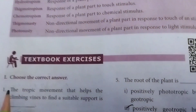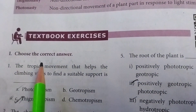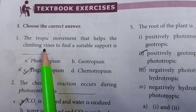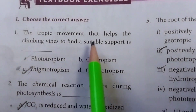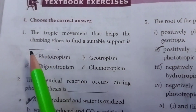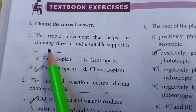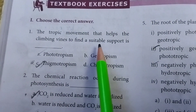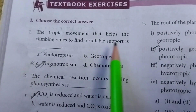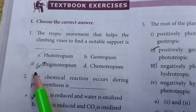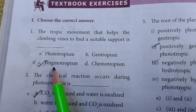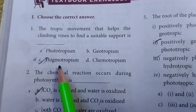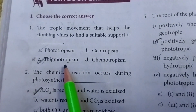First section: choose the correct answer. First one: the tropic movement that helps the climbing vines to find a suitable support is thigmotropism.